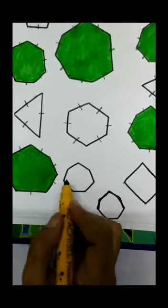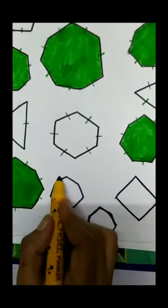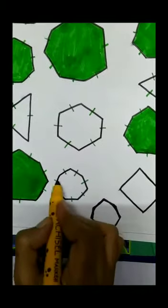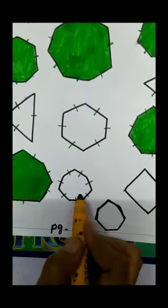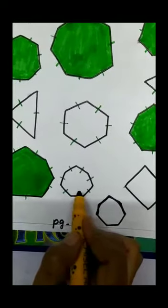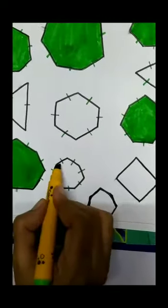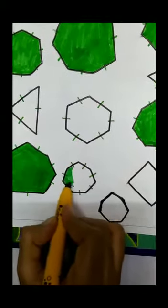Now we will count this image — 1, 2, 3, 4, 5, 6, 7. How many sides? Seven sides. It means which shape is this? This is a heptagon, so we will color this shape, okay?